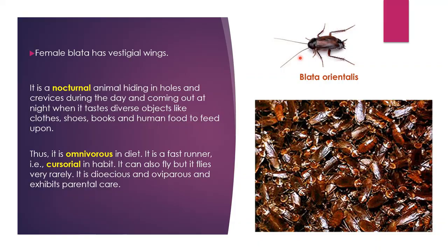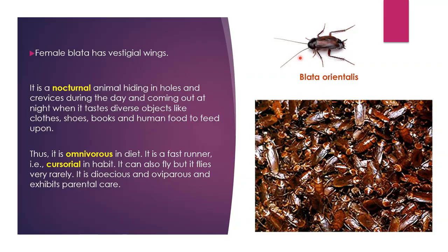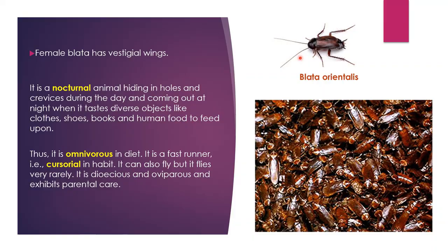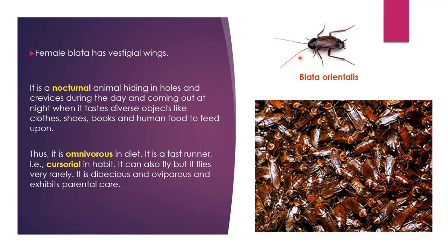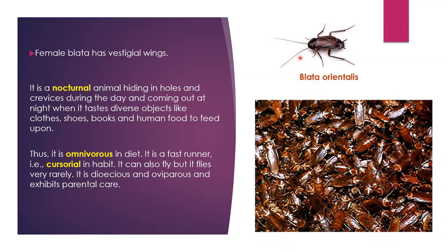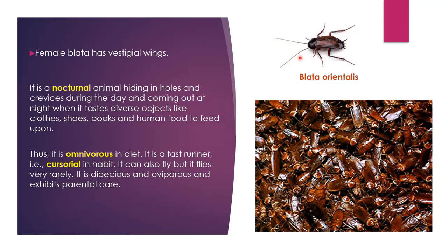ये सब कुछ खा सकते हैं — even ये अपनी ही species के dead animals को भी खा जाते हैं, यानी dead cockroaches को भी। तो हम बोलते हैं they are omnivores — they can eat anything. इसके अलावा, they are cursorial in habit — cursorial animals वो होते हैं जो बहुत तेज़ भाग सकते हैं। Cockroach बहुत जल्दी भाग कर holes या drain pipes में छुप जाता है। They can also fly, but it flies very rarely — short flights ही लेते हैं।